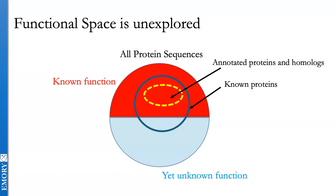The subset of known proteins that are experimentally annotated, or obviously homologous to proteins that have been experimentally annotated, is a very small space. Most people don't recognize how little actual experimental annotation exists — there are only about 15,000 proteins that have been experimentally annotated for their functionality. Everything else we infer on the basis of how they look, homology, structure, and so on.